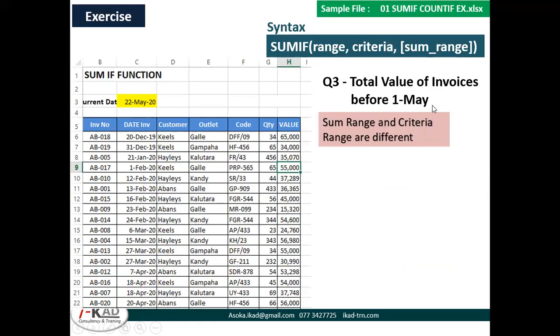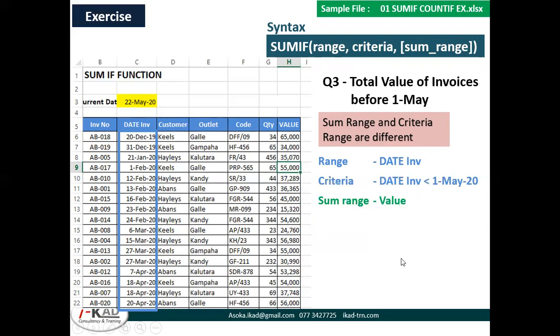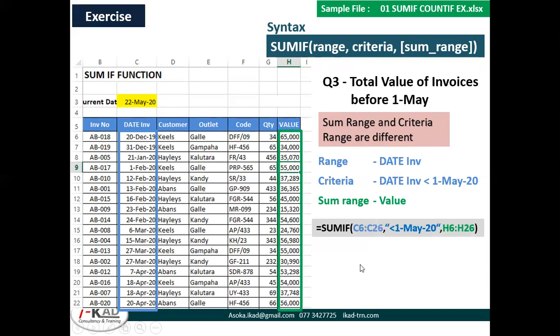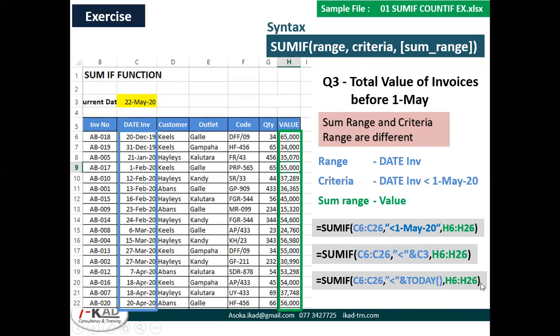Another example: total value of invoices before the 1st of May. The criteria range is date invoice — because you check whether it's before 1st May from the date invoice column. The criteria is 'date invoice less than 1st May'. The sum range is the value column. You put within double quotes 'less than' and combine with a cell reference, or you can say 'less than today()' so it always gives the total of invoices less than today.